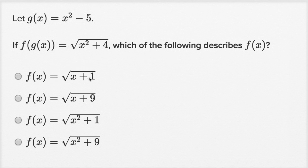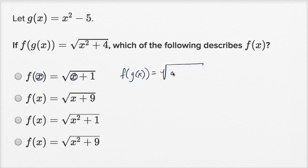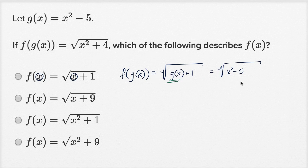If this was f of x, then f of g of x is going to be equal to — everywhere you see an x, you replace it with g of x. So it would be equal to the square root of g of x plus one, and g of x is x squared minus five. So it'd be the square root of x squared minus five plus one, which is the square root of x squared minus four.